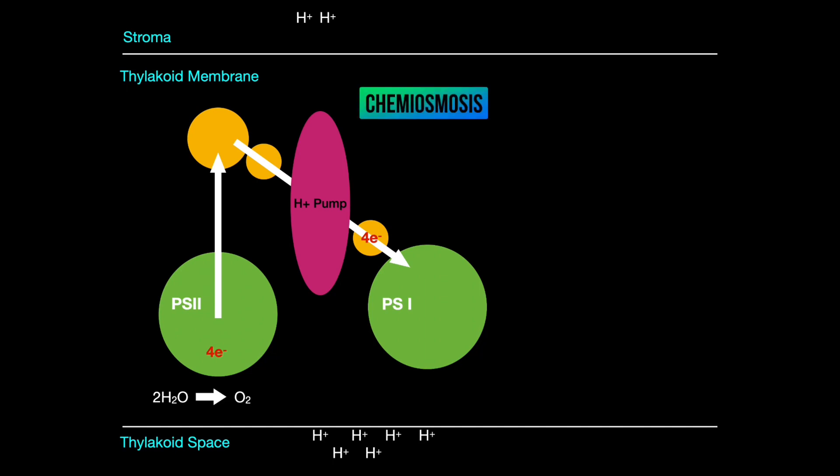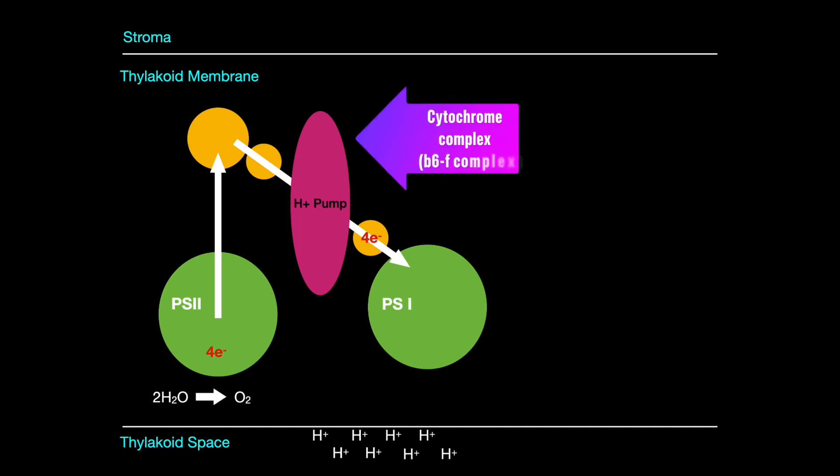The energy loss drives chemiosmosis, where hydrogen ions are actively pumped from the stroma into the thylakoid space. This pump is actually a cytochrome complex called B6F complex, but in IB you're not required to know the name of it.